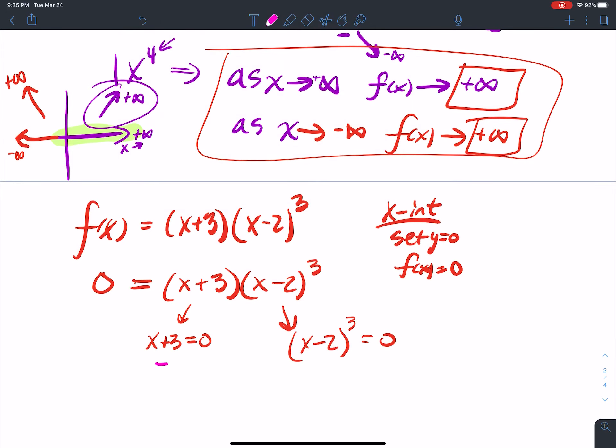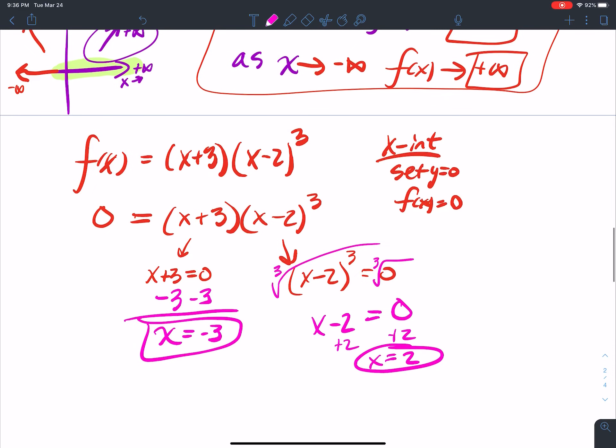This one's easy to solve. The first one, I just subtract 3. And I get x equals negative 3. Okay, the next one's a little bit more difficult, but it's not that bad. Get rid of a cube by cube root. The cube root of 0 is still 0. So it's just x minus 2 equals 0. Add 2. And x equals 2. So those are my two intercepts. Negative 3, 0. And 2, 0. Those are x-intercepts.